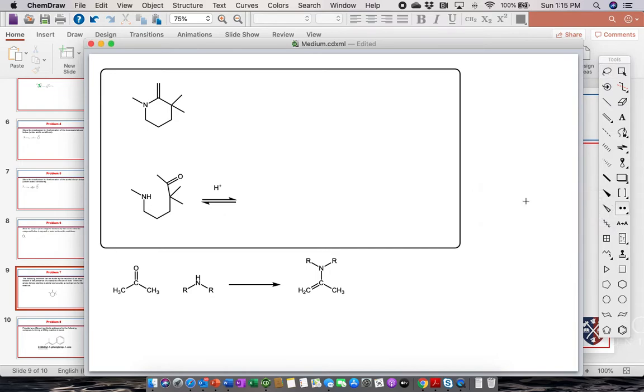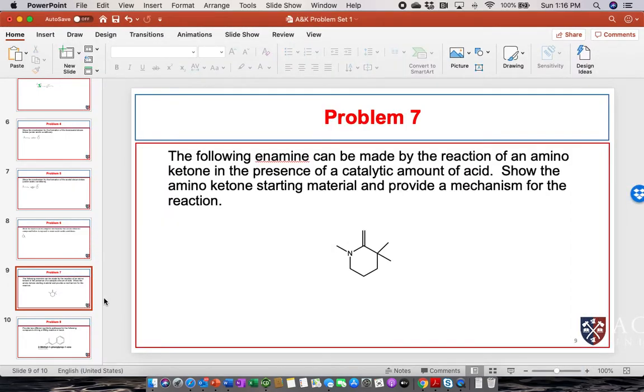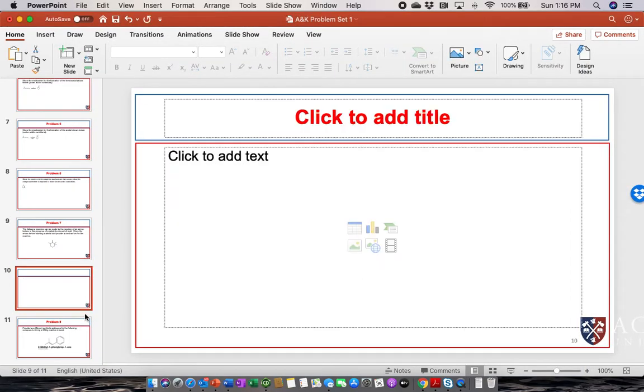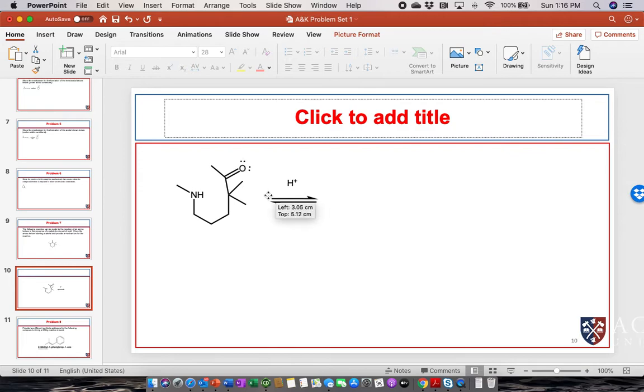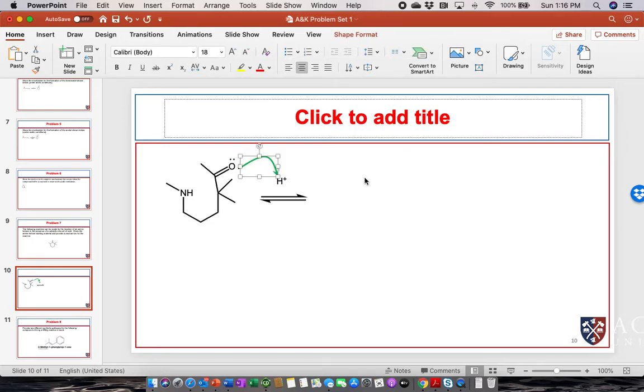Now we know the most likely place for this proton to protonate is this nitrogen here. But we want to protonate the oxygen to activate the carbonyl compound. Even though we know that the nitrogen is more basic, that's just not going to lead us anywhere. I'm going to pull all this stuff over to PowerPoint. I like using the arrows in PowerPoint better.